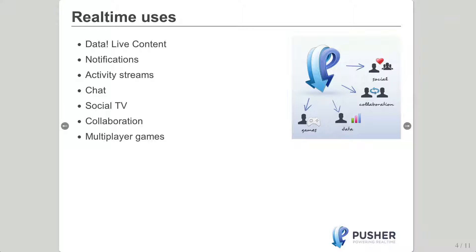So what are the uses of real-time technologies? Everything is data — that's the fundamental use. We're delivering data. From that, people build notifications, activity streams, interactive experiences like chat, social TV experiences, second screen applications, collaborative applications like Google Apps, and multiplayer games, to mention just a few.